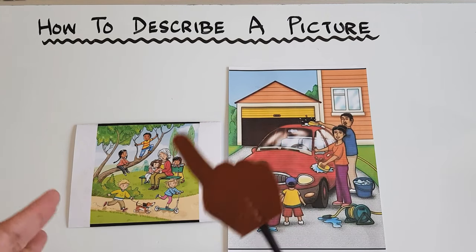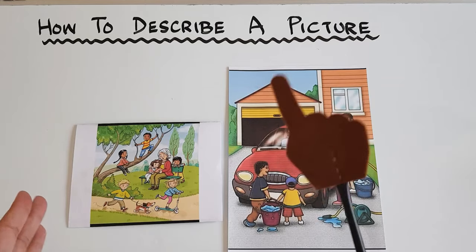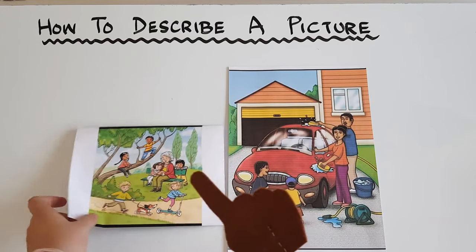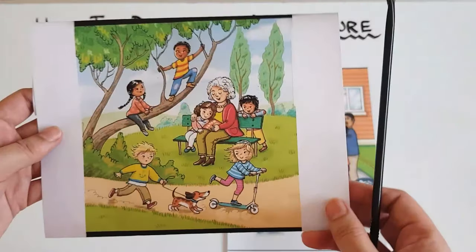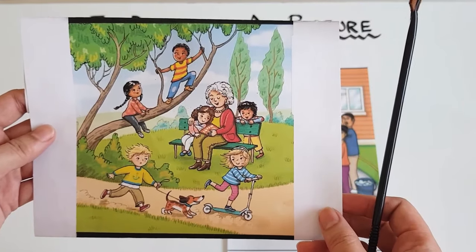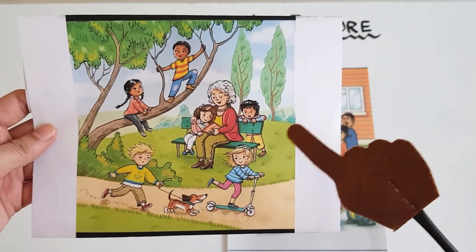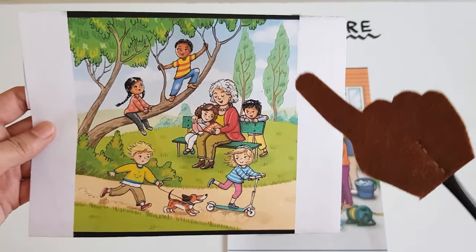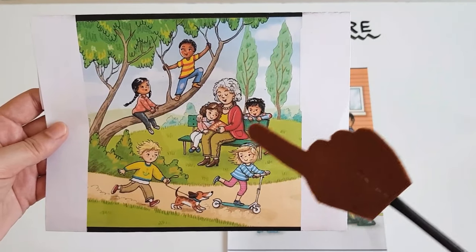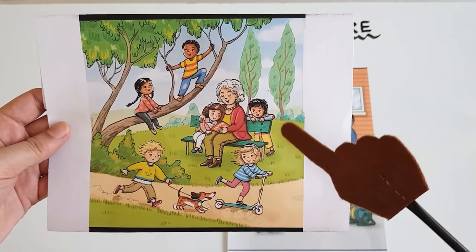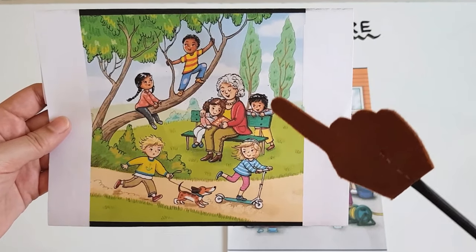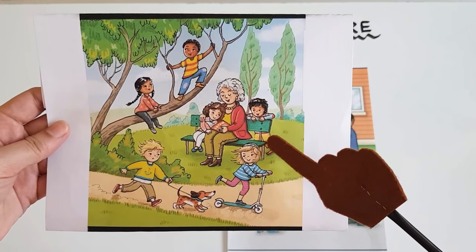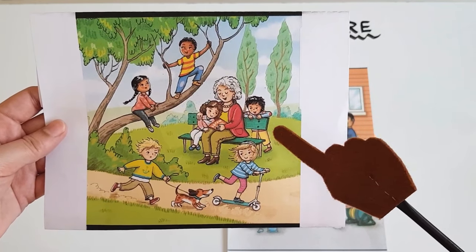The first step will be to talk about the picture verbally. As you can see, this picture shows a scene of a park. Show this picture to your children and ask them what they see in the picture, and after some discussion, tell them that first of all we shall write the setting of the story or paragraph.